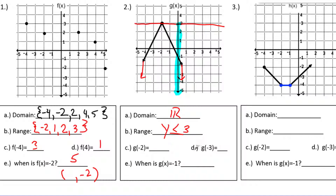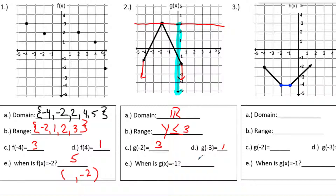For g of negative 2, the output is 3. For g of negative 3, the output is 1, so the point negative 3 comma 1 is on the line. Letter e asks: when g of x equals negative 1, what is x? It looks like the point 0 comma negative 1 is on the graph, so the x value has to equal 0 to get an output of negative 1.